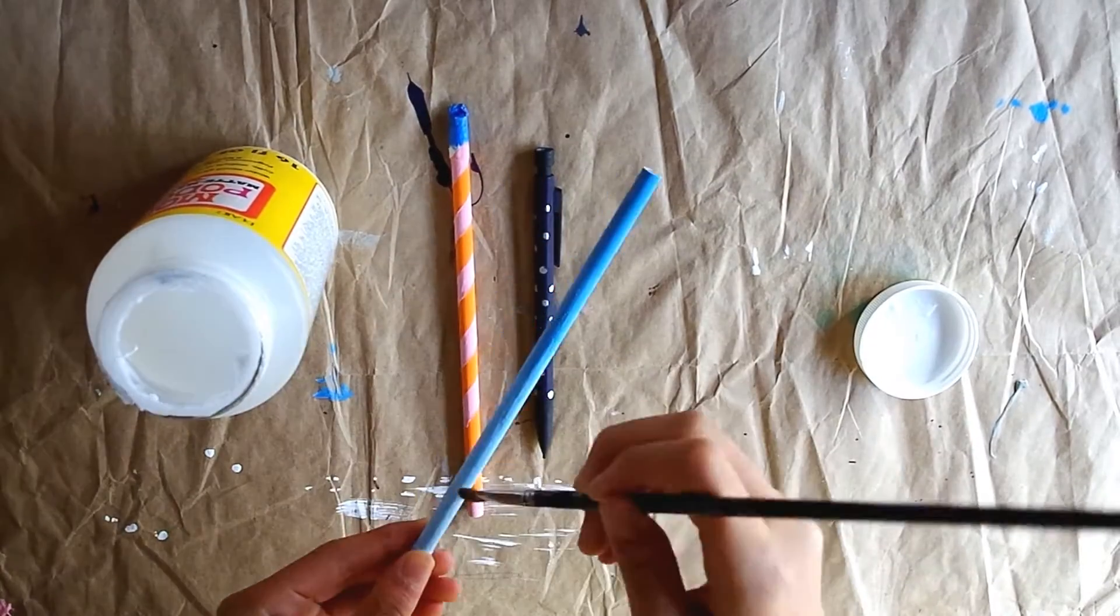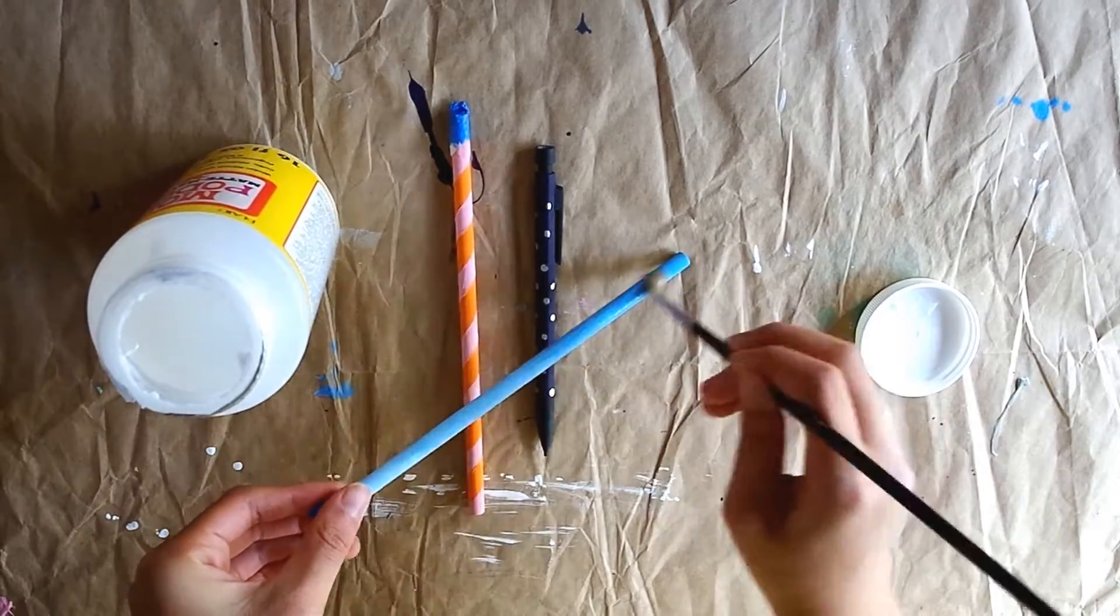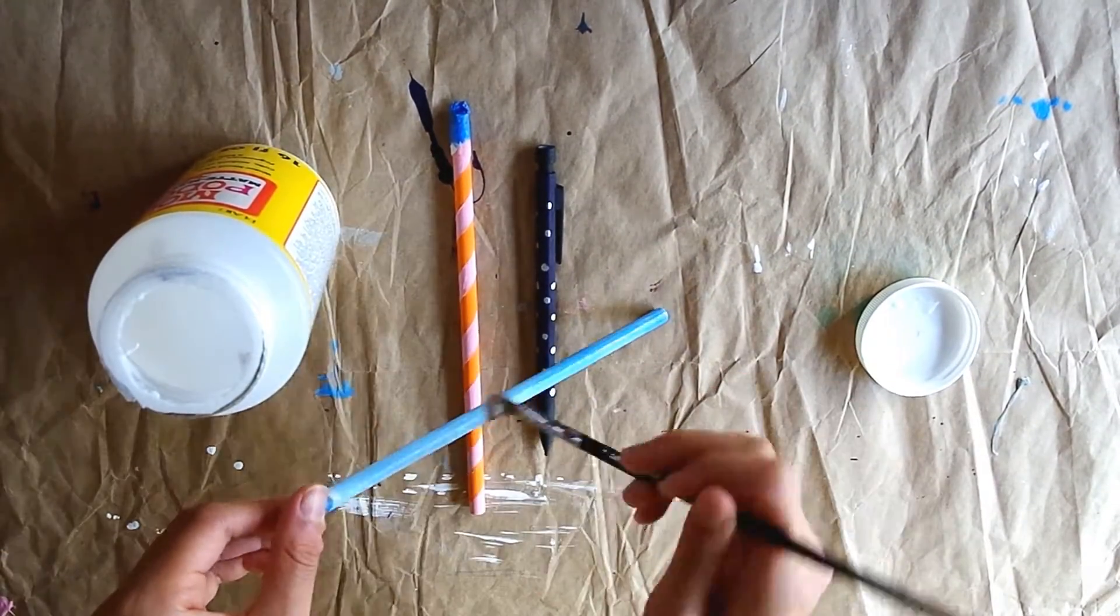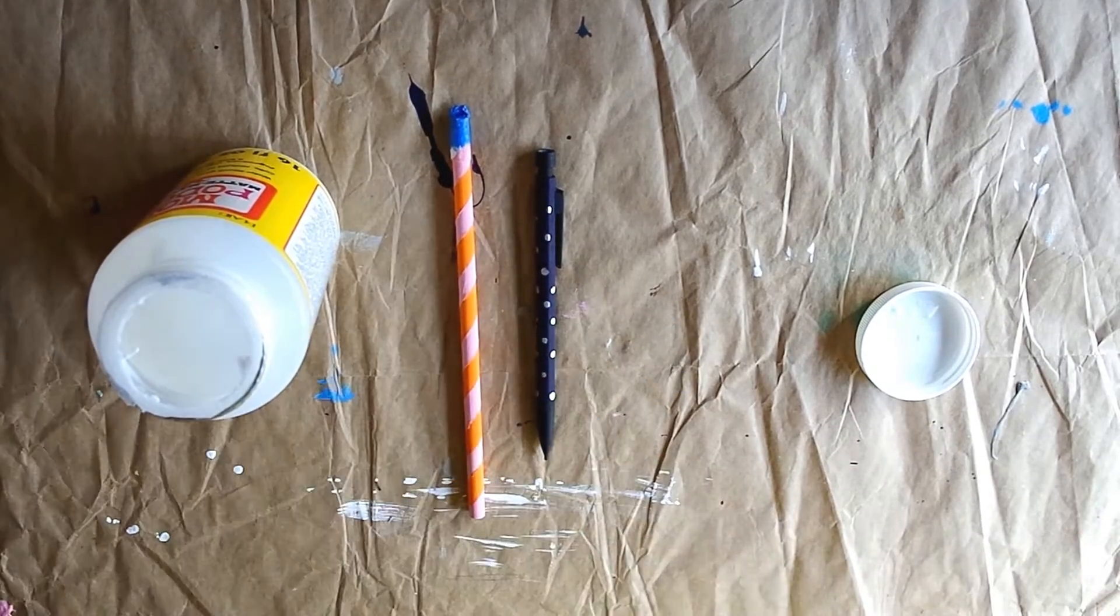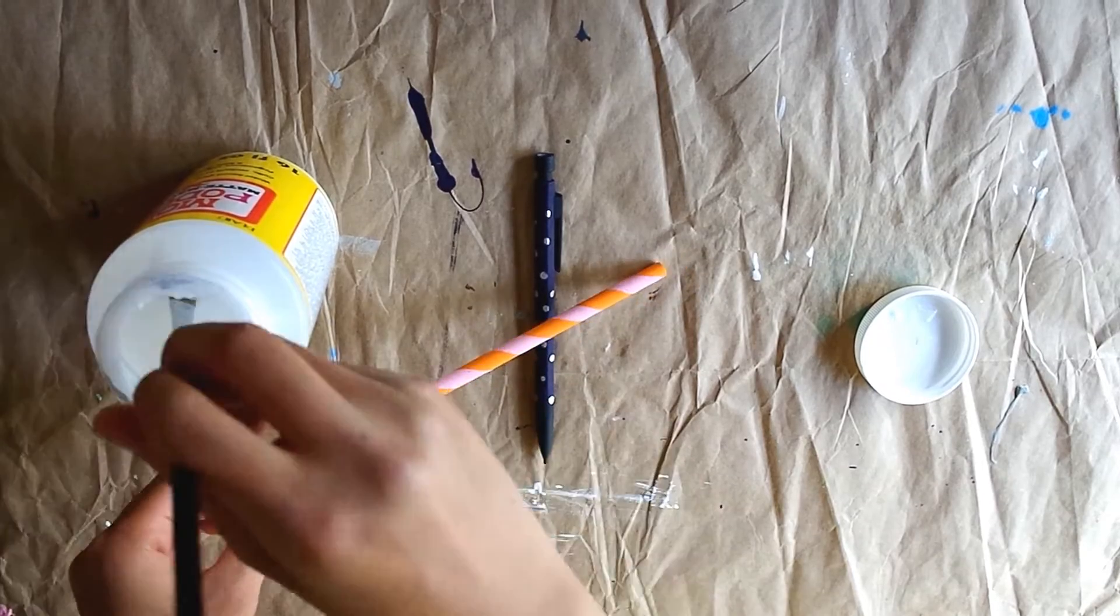Once your pencils are completely painted and you're completely happy with how they look, it's time to place a varnish over them. Now obviously this step is optional, but I prefer to do this because I don't like the feel of paint against my hands and also I don't want the paint to be chipping off the pencil.